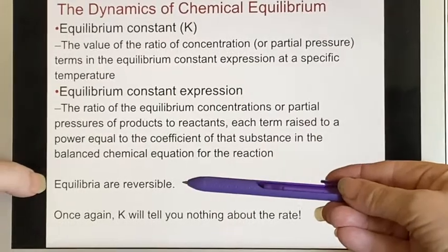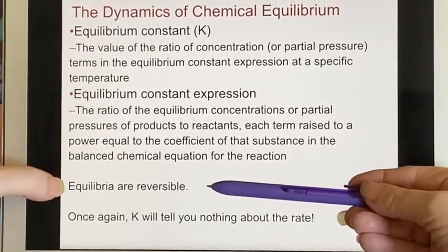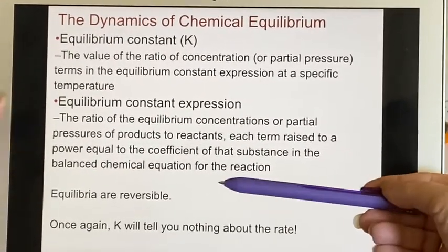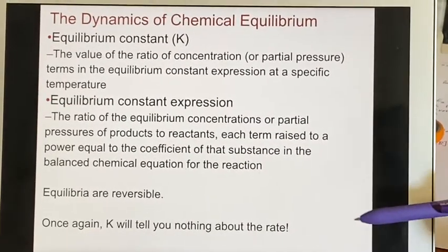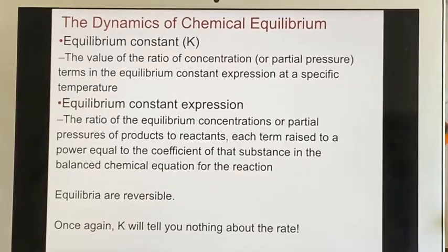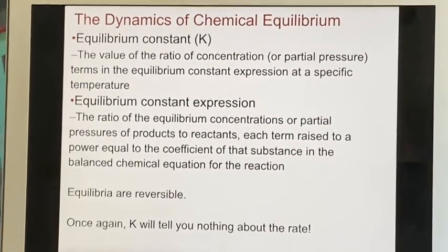Equilibria are inherently reversible because you're talking about something where there is a reaction rate in both directions. So they are reversible and they tell you nothing about how fast that they will end up coming into existence.